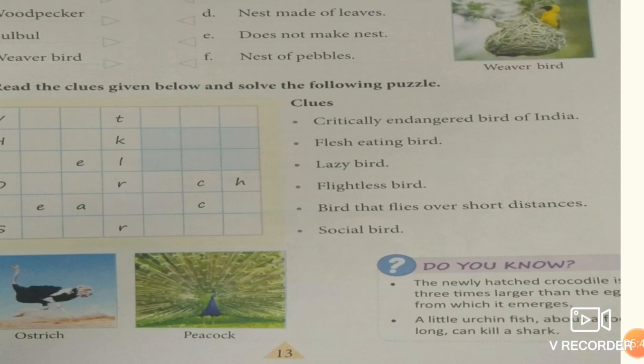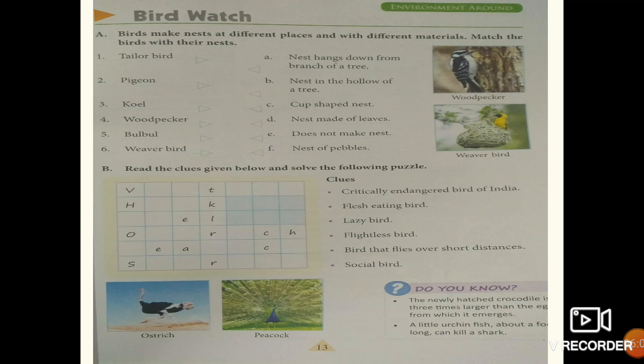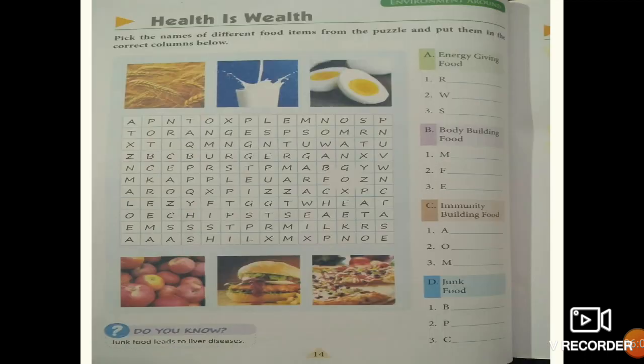Social bird, most common bird — sparrow (S-P-A-R-R-O-W). Did you know: the newly hatched crocodile is three times larger than the egg from which it emerged, and a little urchin fish about a foot long can kill a shark. That is the 'Do You Know' section for page 12. Now come to Health Is Wealth.